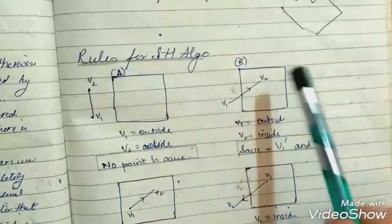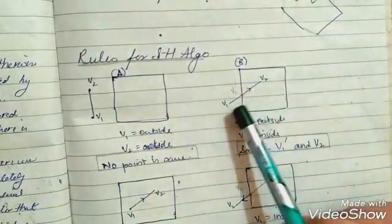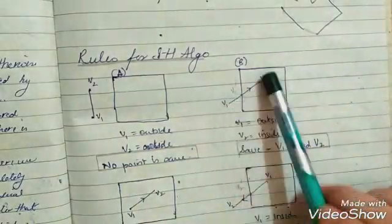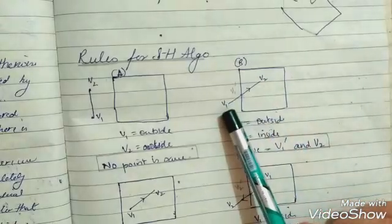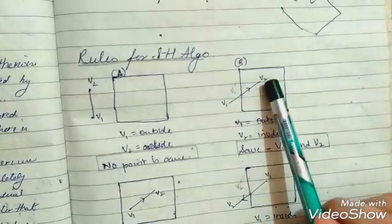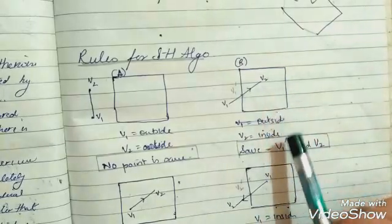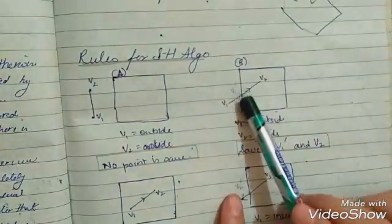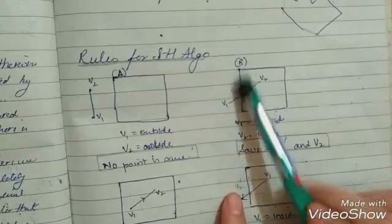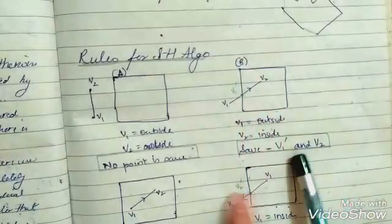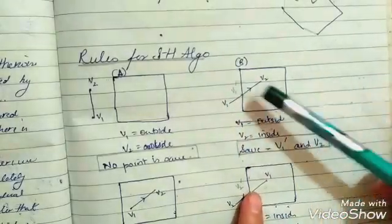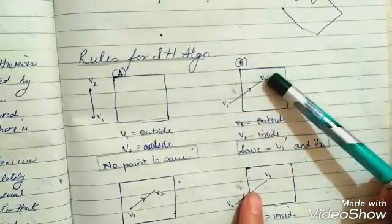In figure B, we are traveling from V1 to V2. V1 is outside and V2 is inside the window. Therefore, we are going to save this portion V1' which is lying on the window, and V2. These both points are going to be saved.